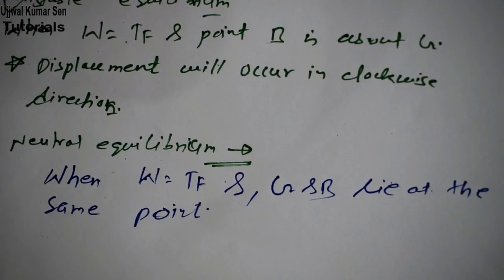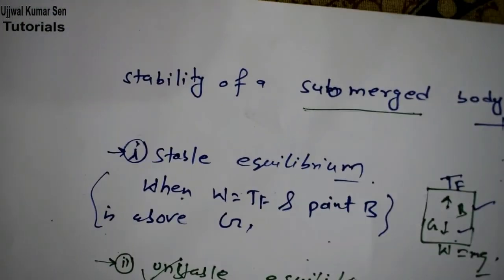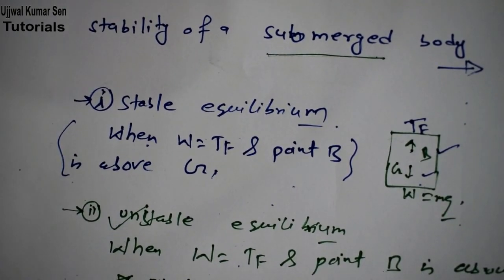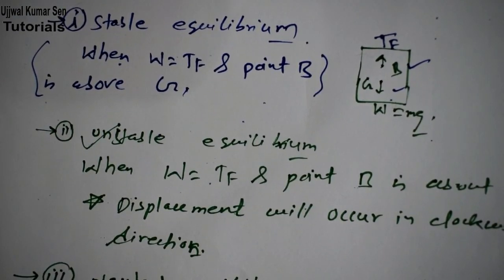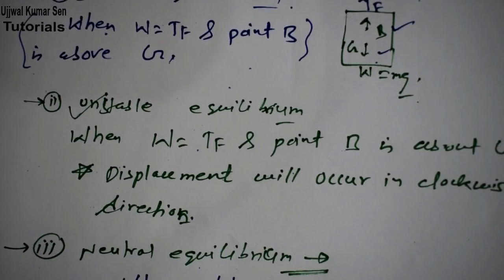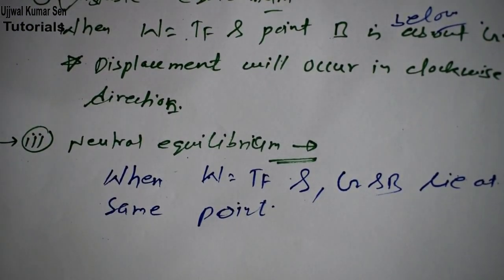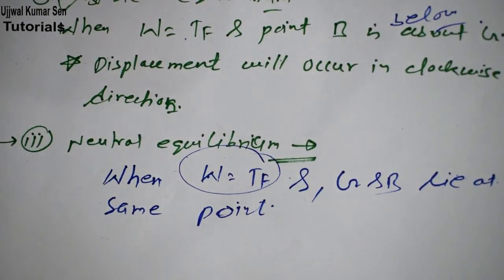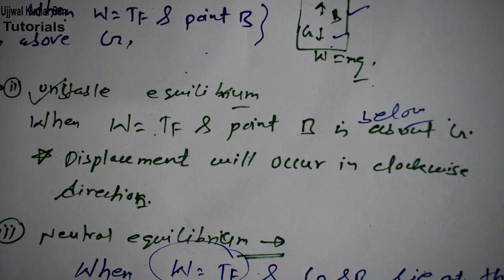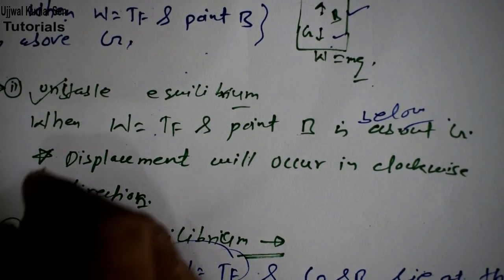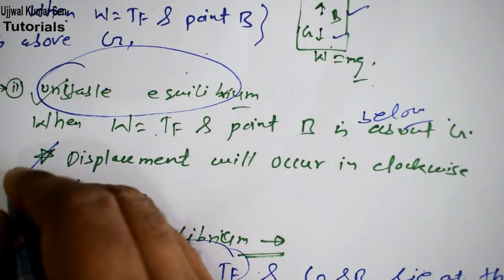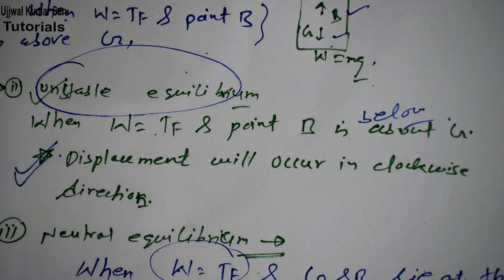Let's do a quick revision. Stable equilibrium: W equals TF and point B is above G. Unstable equilibrium: W equals TF and point B is below G. Neutral equilibrium: W equals TF and B and G lie at the same point. The unstable equilibrium case is especially important to remember for examinations.